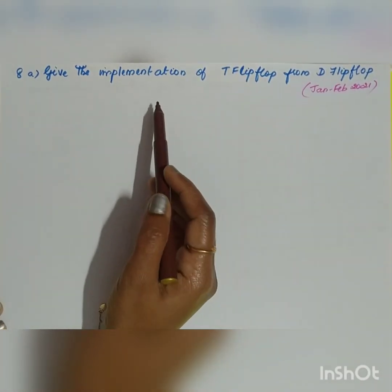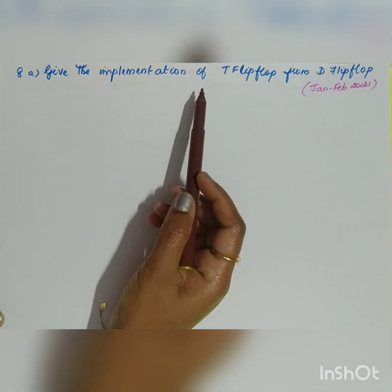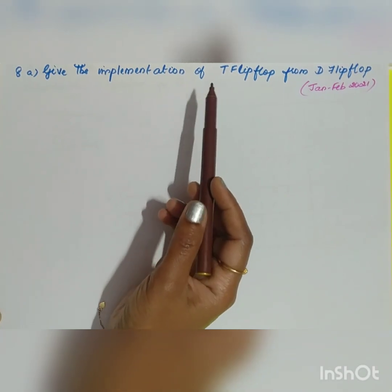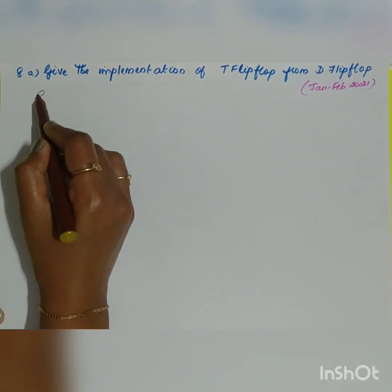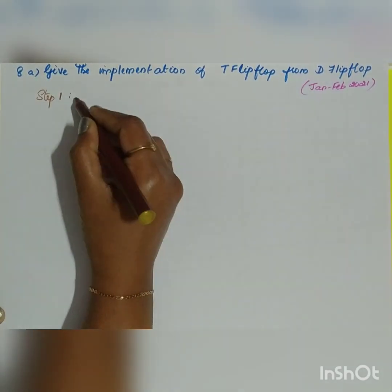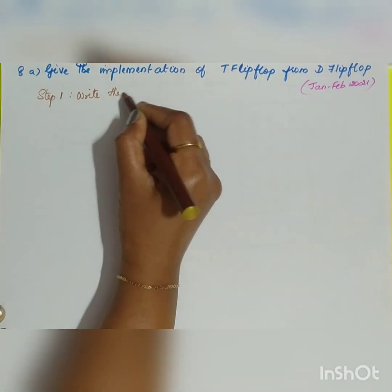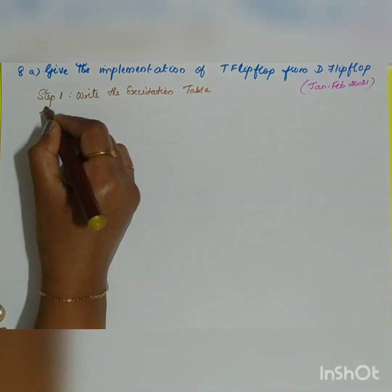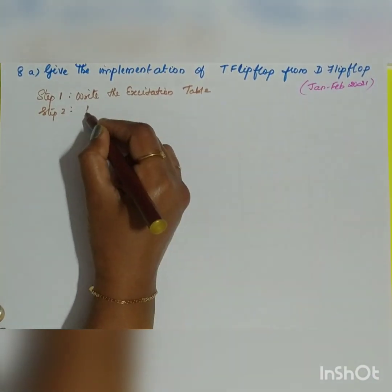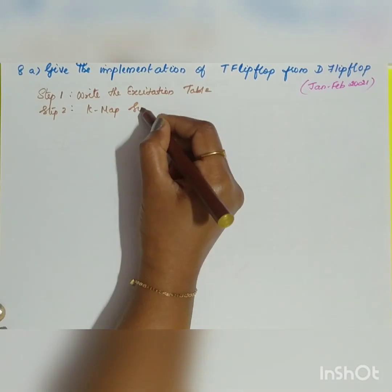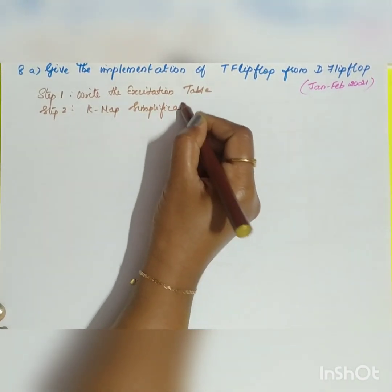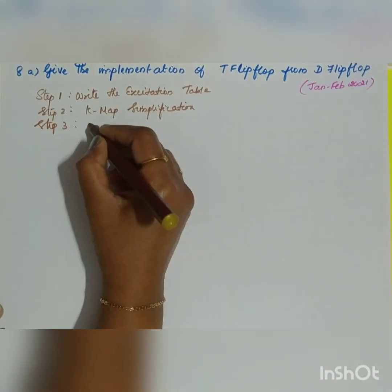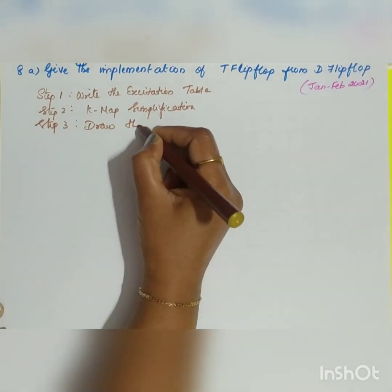The next question is to give the implementation of a T flip-flop from a D flip-flop, which is a form of flip-flop conversion. For D to T flip-flop conversion, there are three important steps: step one, write the excitation table; step two, simplify it using K-map; and step three, draw the desired logic diagram.